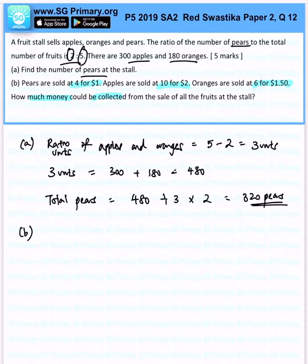Let's count individually. First, we have amount of sale from pears. That would be 320 divided by 4 times $1, and that will be $80.